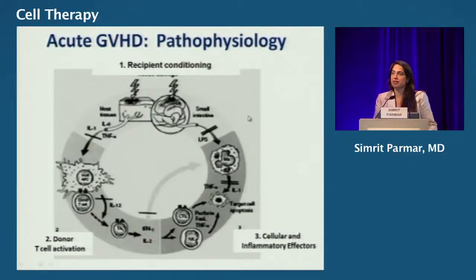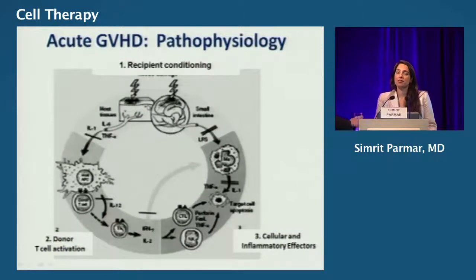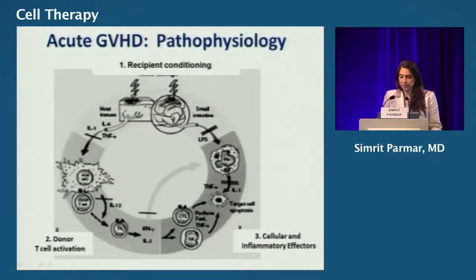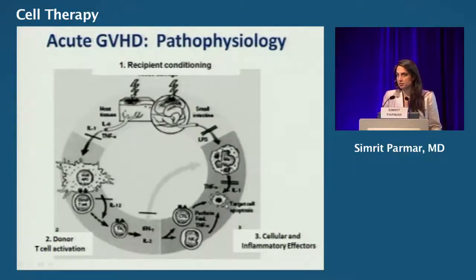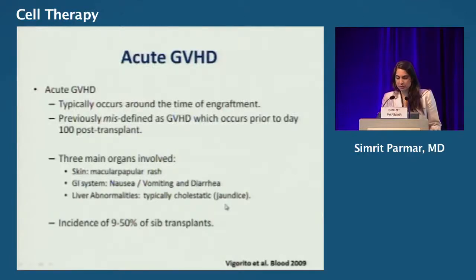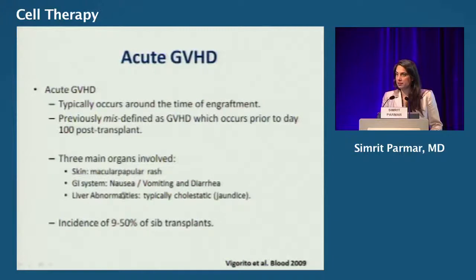Graft-versus-host disease primarily is a function of three essential steps. One is the recipient conditioning, which leads to endothelial damage. Endothelial damage triggers GVHD as it engages the host antigen-presenting cell and activates the donor T cell. As a result of this interaction, there is a release of inflammatory cytokines, leading to a cytokine storm, which in turn leads to organ involvement. GVHD is seen as a maculopapular rash of the skin, nausea, vomiting, and diarrhea in the GI tract, and liver abnormalities — primarily cholestatic jaundice.